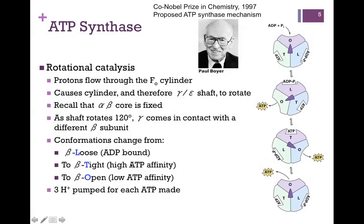It was Paul Boyer who shared that Nobel Prize in 1997 because of his elucidation of this mechanism. It's called rotational catalysis because it's the turn of that shaft that drives synthesis. Remember, it's the FO cylinder embedded in the membrane that translocates those protons — as it does so, the cylinder turns, and along with it that gamma shaft. The alpha-beta core is fixed, so as that shaft turns, it contacts a different beta subunit, and that's why the conformations differ.